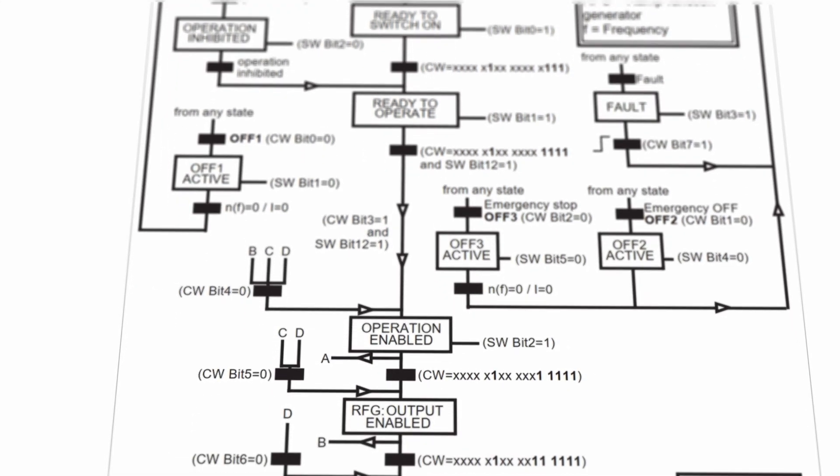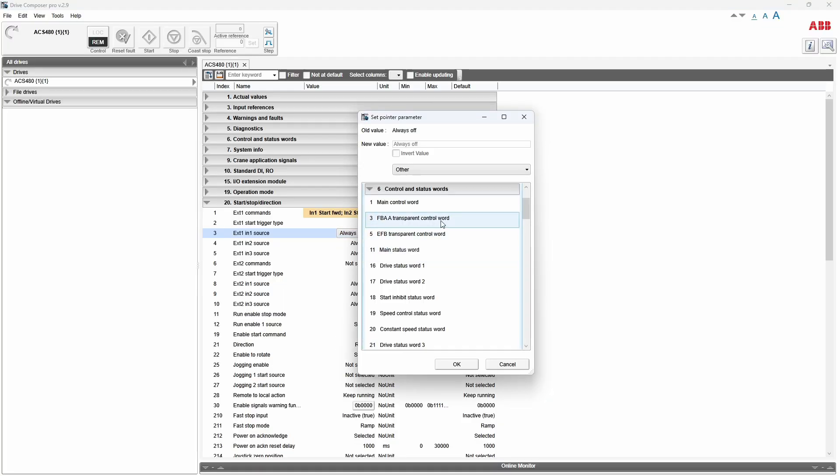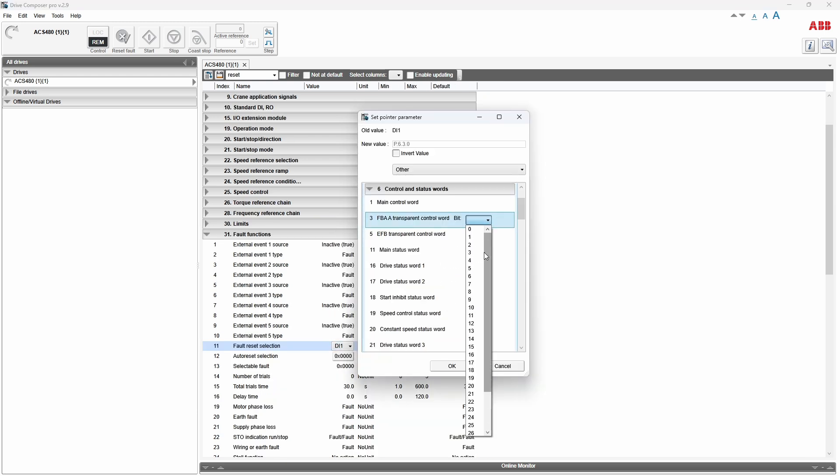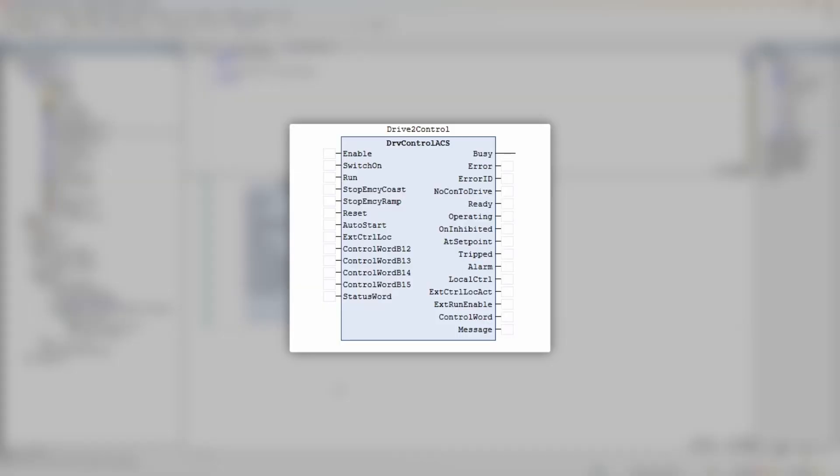You might ask now, can we somehow skip this monstrosity called state machine? And I have even two options for you. Number one: you can use the so-called transparent profile, which means no state machine whatsoever, but each bit of the control and status words must be manually connected to the desired function like start, reverse, ready, or fault. This will work, but I would suggest against it, because clever people worked many hours to come up with a versatile, efficient, and most importantly safe way to control the drive. So what's the second option? Stay with ABB profile and use the function block we just added, which under the hood handles the drive state machine and leaves us simple Boolean inputs to control the drive.